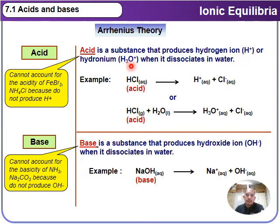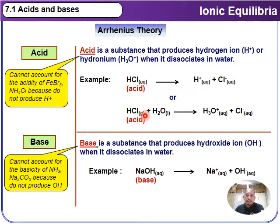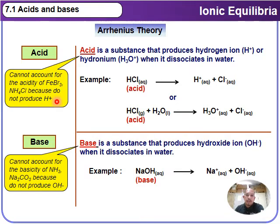An example of an Arrhenius acid: HCl in aqueous solution completely dissociates to form H⁺(aq) and Cl⁻(aq). Also, HCl gas when mixed with water, H₂O, produces H₃O⁺(aq) and Cl⁻(aq). However, according to this theory, the acid cannot account for the acidity of compounds such as FeBr₃ and NH₄Cl, because these compounds do not produce any H⁺ ion.